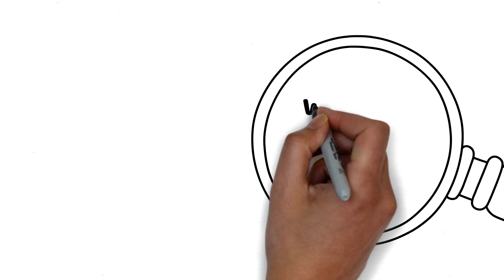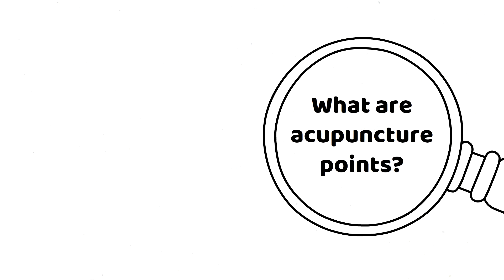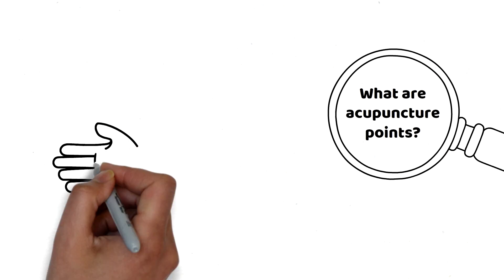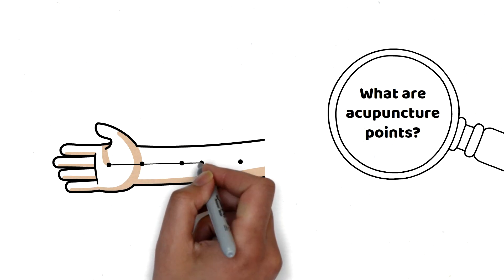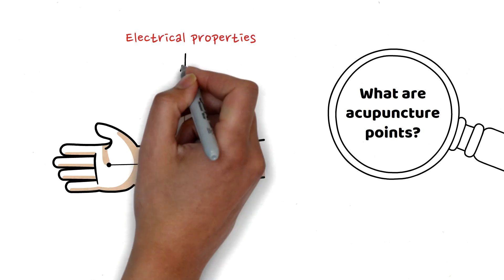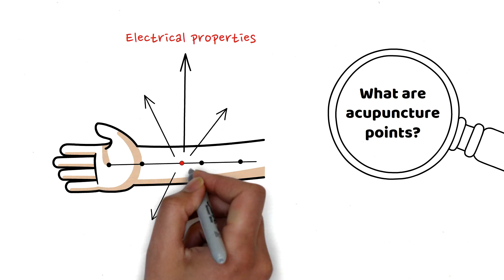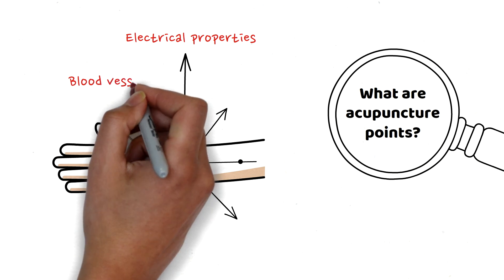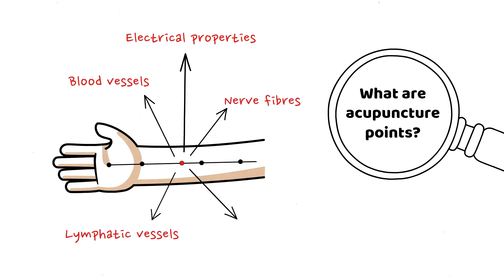Let's begin by looking deeper into what acupuncture points are from a biomedical perspective. Research studies show that acupuncture points are unique areas on the skin that exhibit specific electrical properties, such as higher conductance and lower impedance than the surrounding skin. They're located in areas abundant in various tissue structures, including blood vessels, nerve fibers, lymphatic vessels, and mast cells.